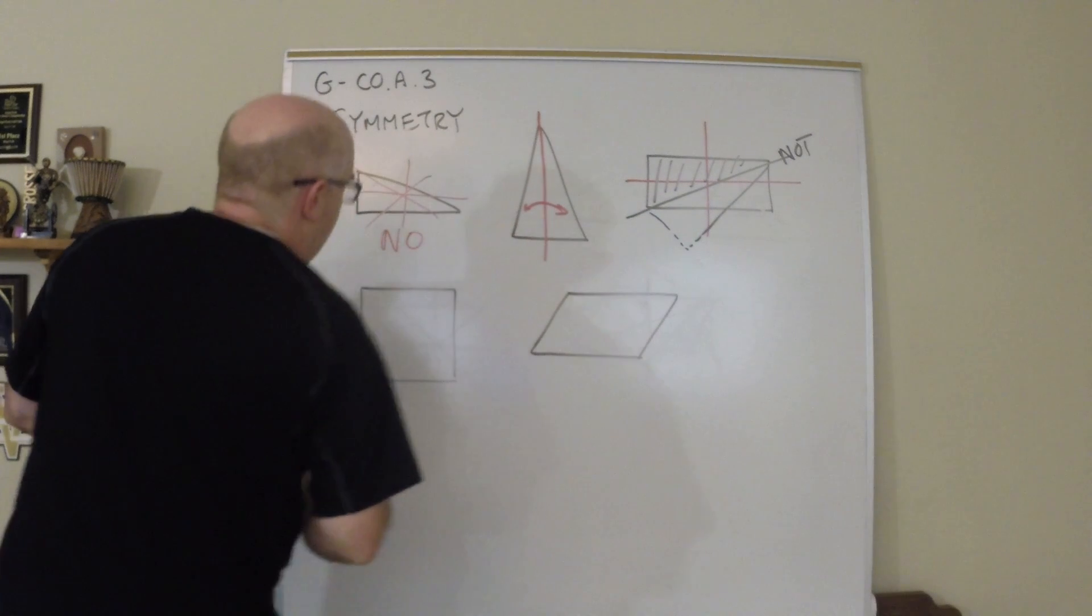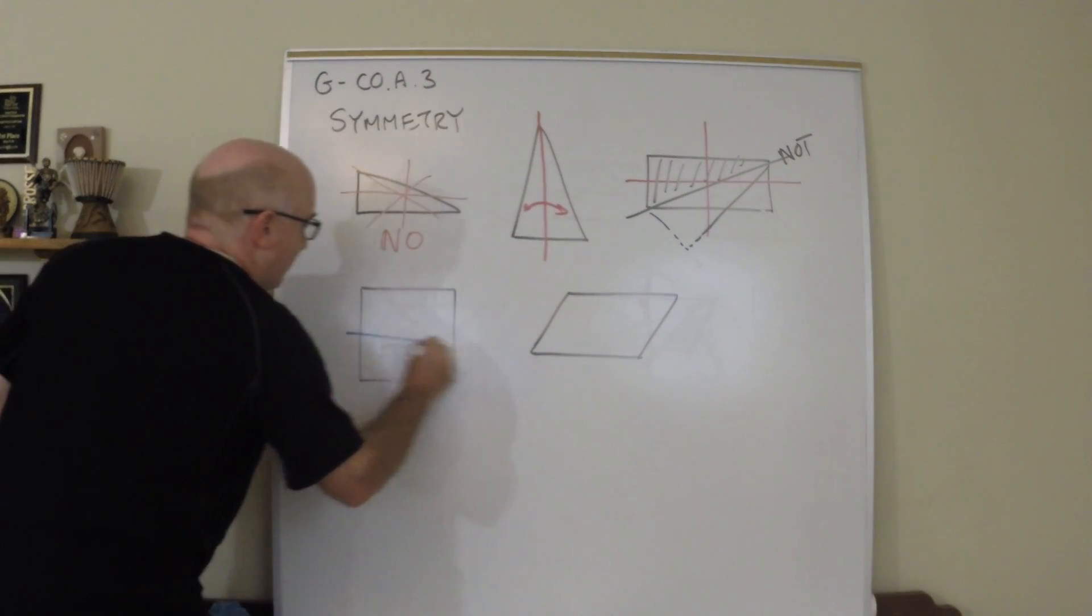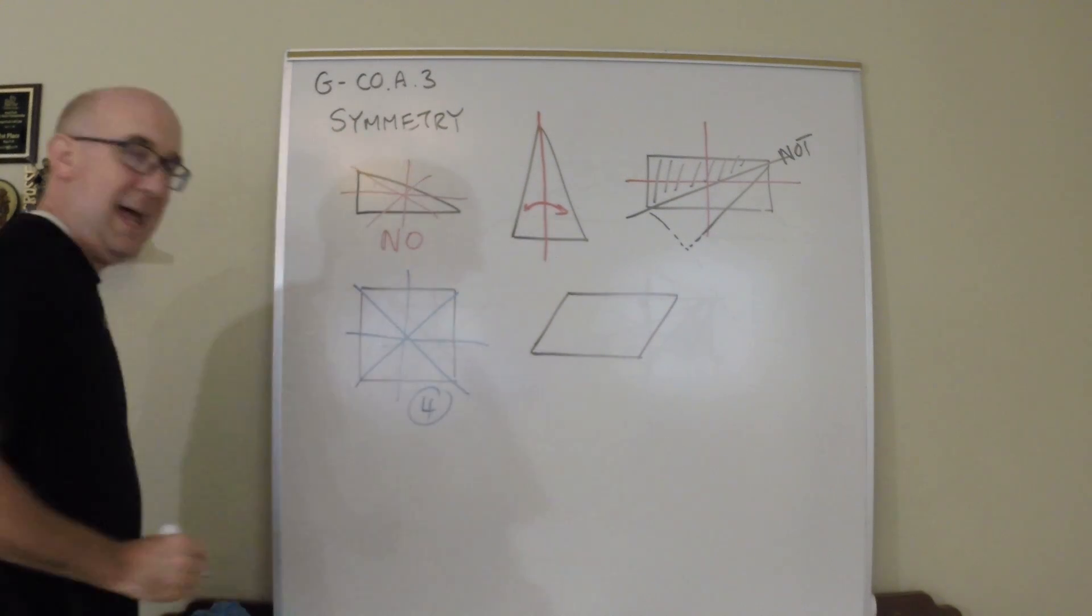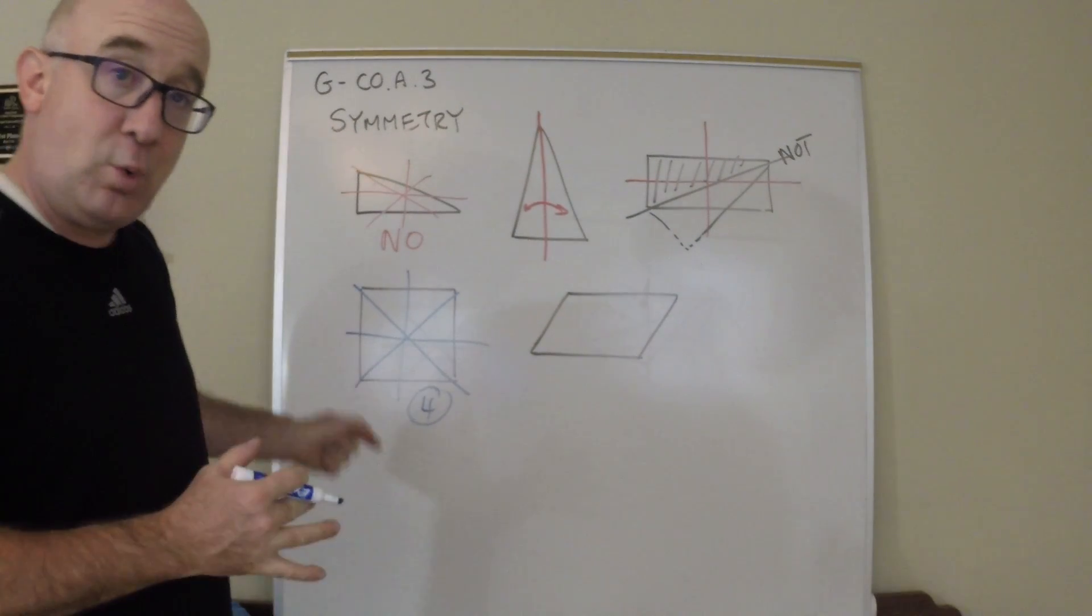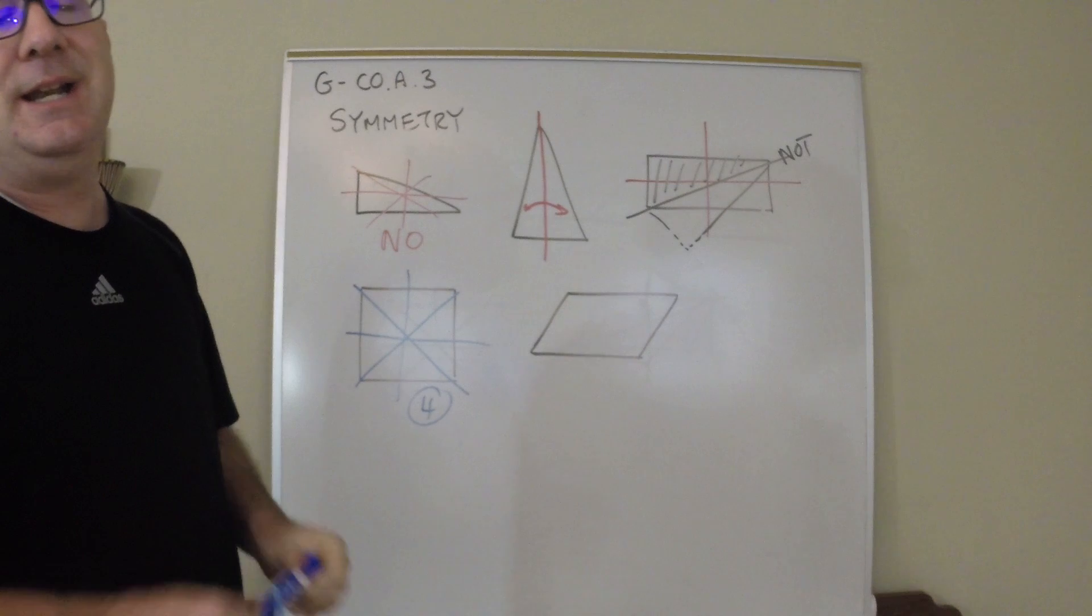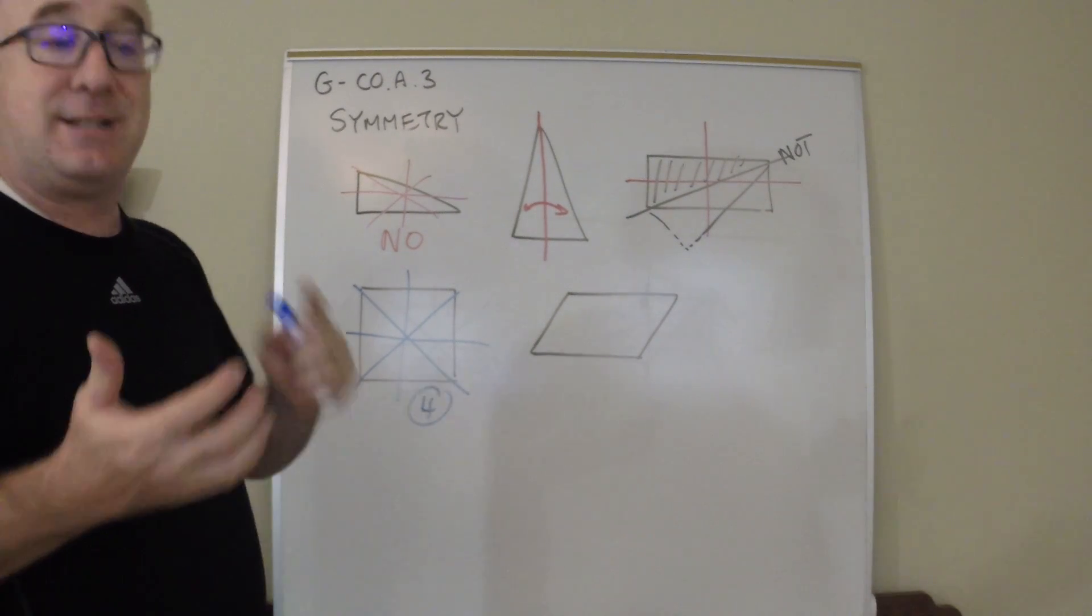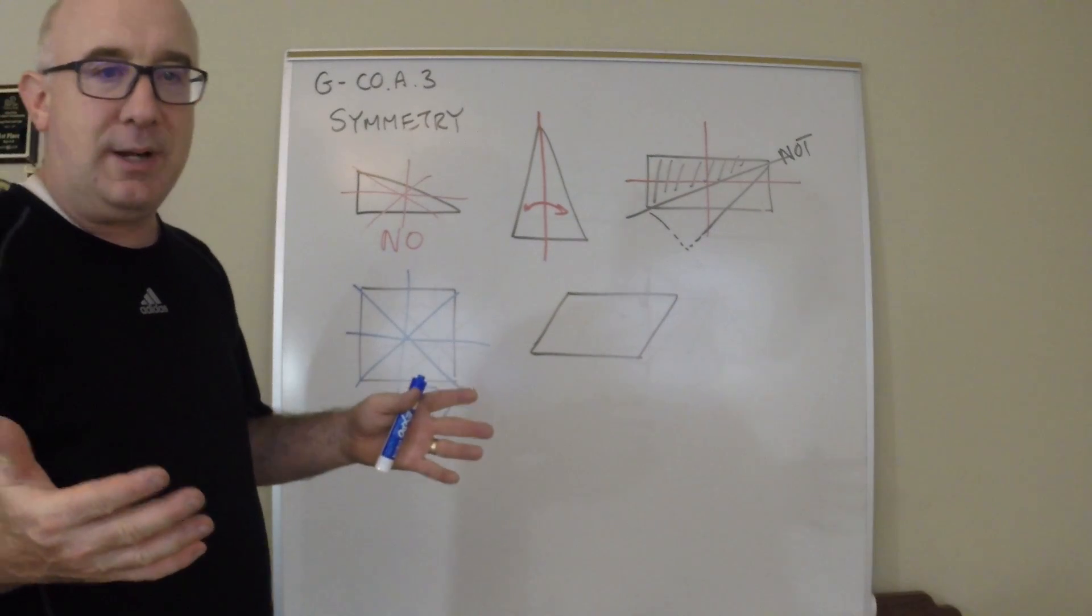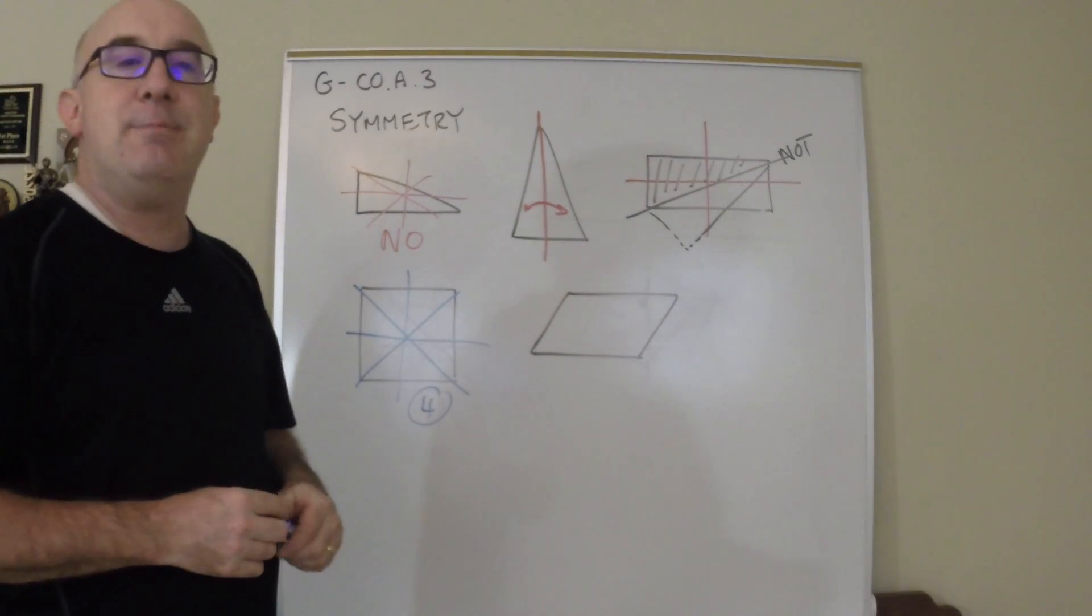Our square has the maximum lines of symmetry. It has four for a quadrilateral, the maximum for the quadrilateral. The reason it has the maximum is because it has the most equal angles, the most equal sides, and so on. It's the regular polygon, so it has the most.